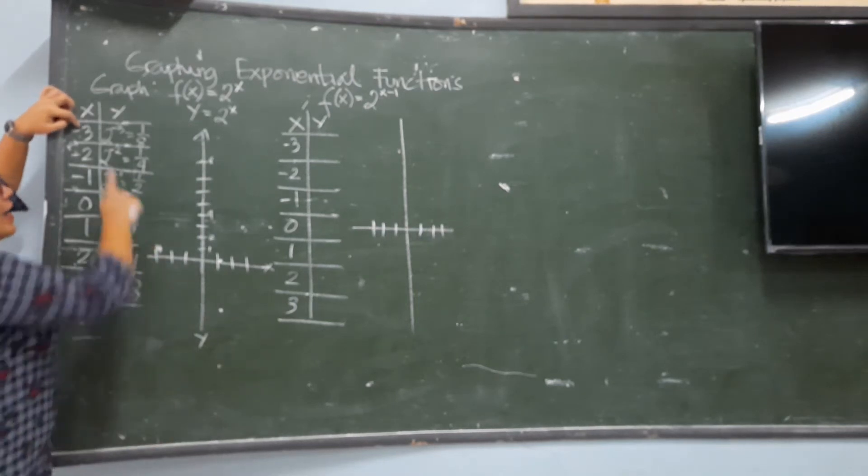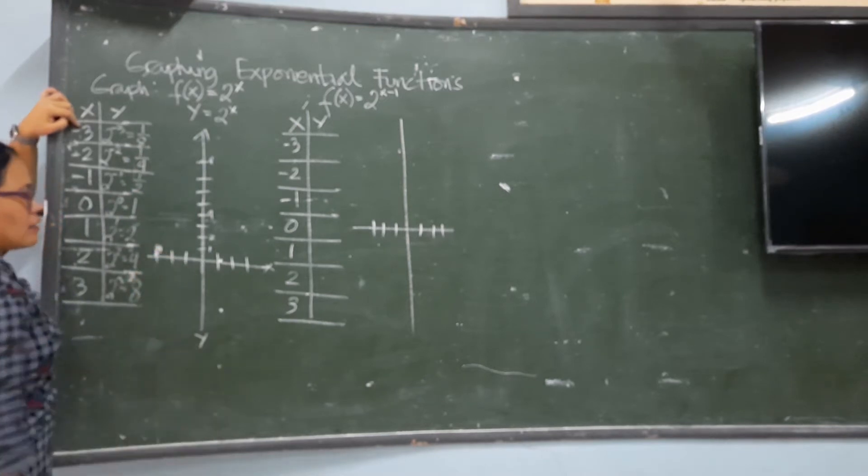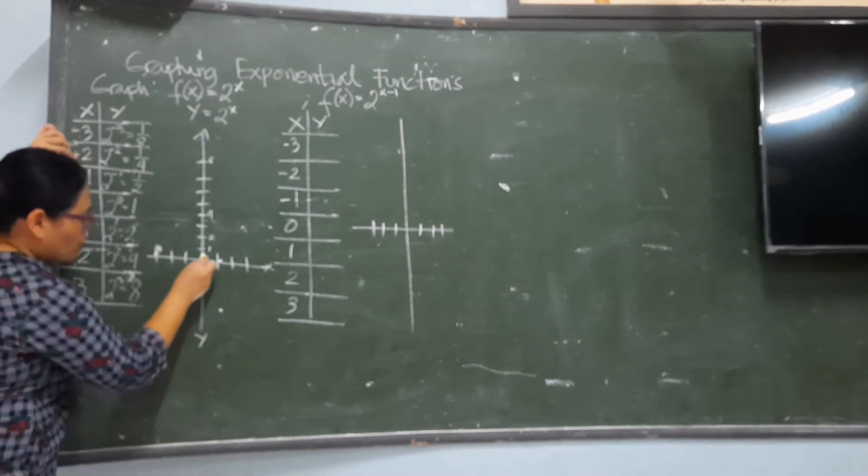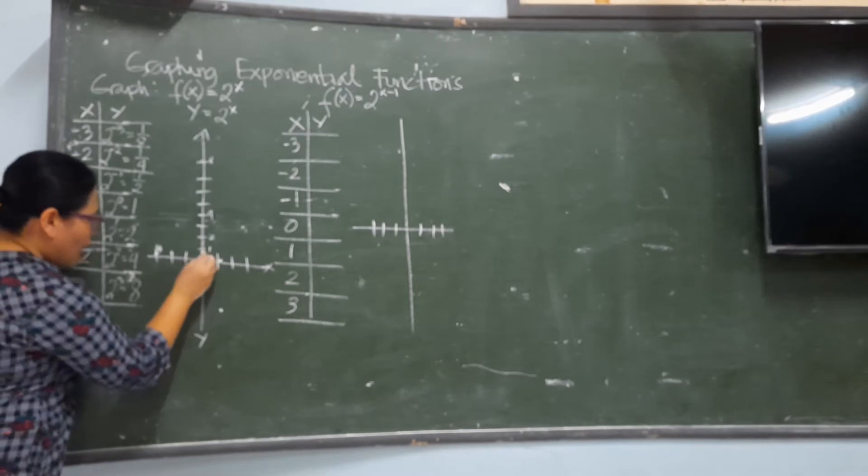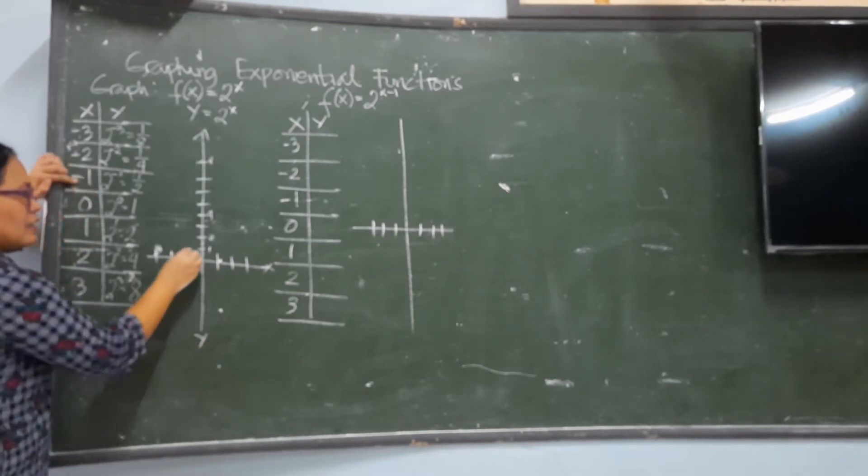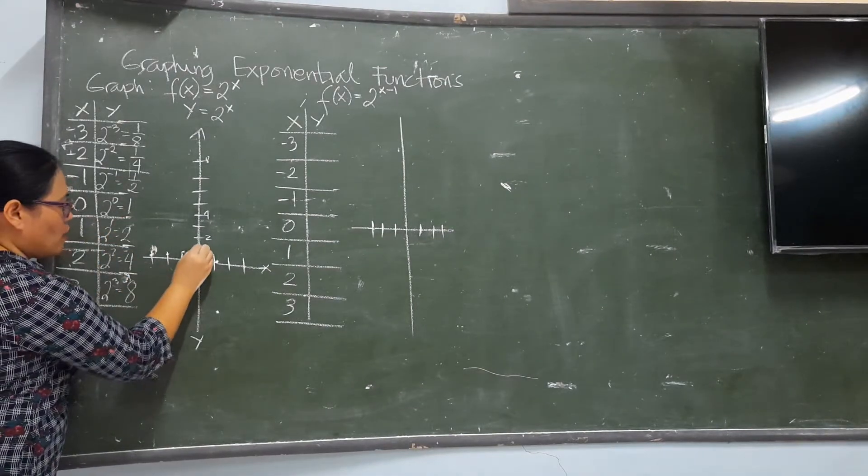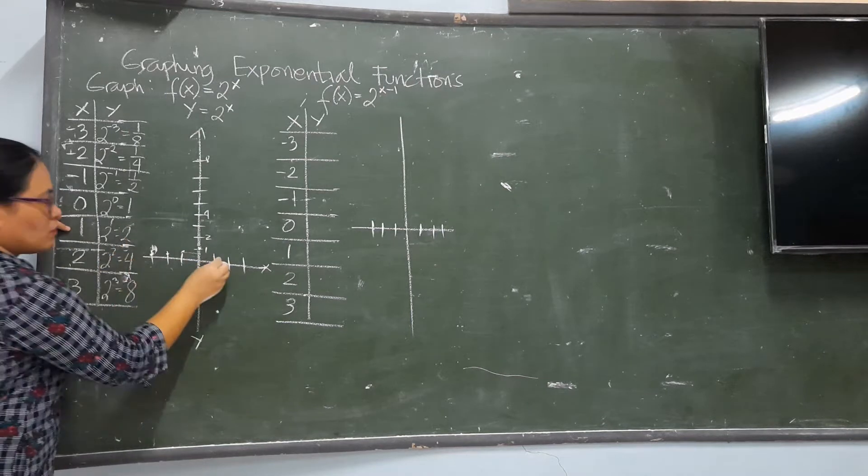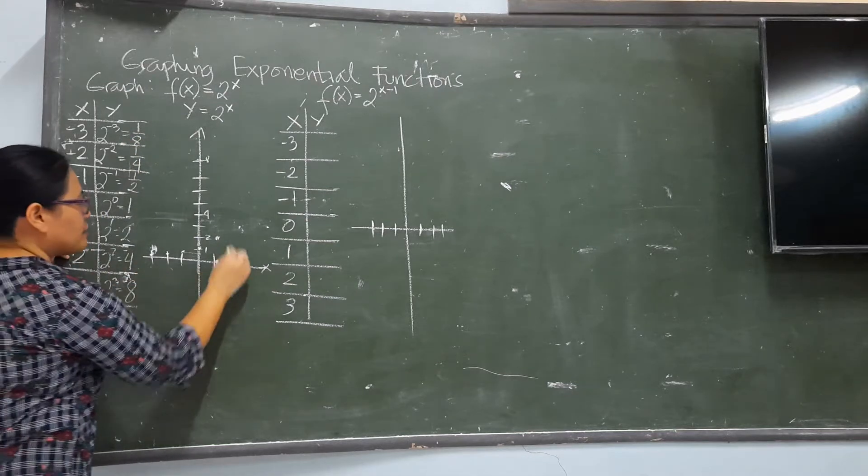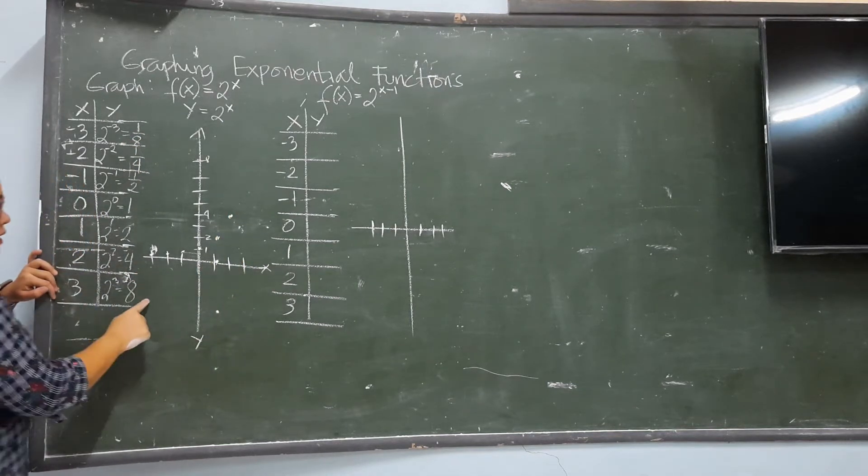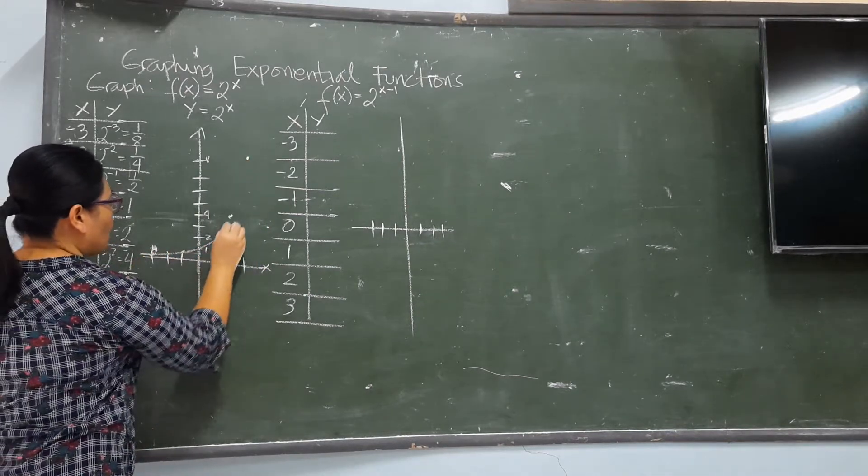So, negative 3 for X, and 1/8 for the value of Y. Next, negative 2, 1/4. Negative 1, 1 half. 0 and 1. 1, 2. And then, it increases rapidly directly. 2, 4. 3, 8. So, your graph is going that way.